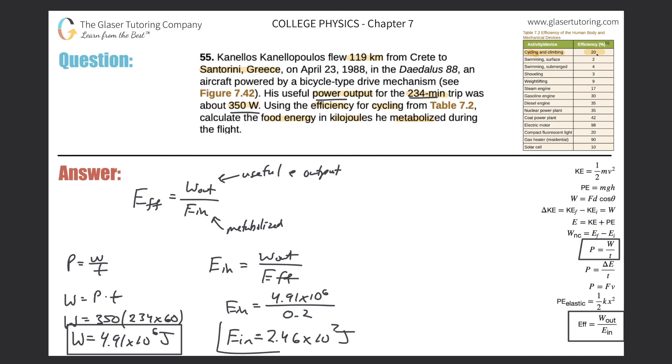Okay, so this is the energy that he metabolized. But let's just make sure, well, they wanted it in kilojoules. Calculate food energy in kilojoules. So I found it in joules. So just take this value, divide it by 1,000. Or just subtract 3 from this exponent. So therefore, this would be 2.46 times 10 to the 4th kilojoules. And that would be your final answer.